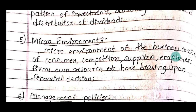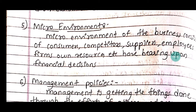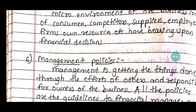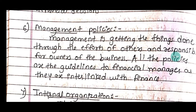The fifth internal factor is the micro environment. The micro environment of a business consists of consumers, competitors, suppliers, and employees. The firm's own resources have a bearing on financial decisions. Micro means that which is purely controllable. Business has to consider these stakeholders — consumers, competitors, and others — very carefully, as they have a clear impact on financial decisions.